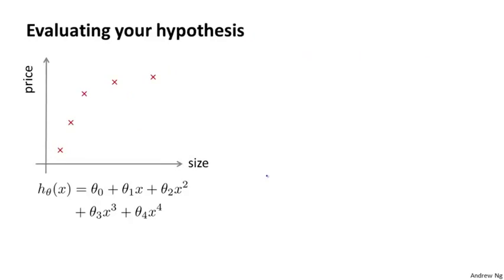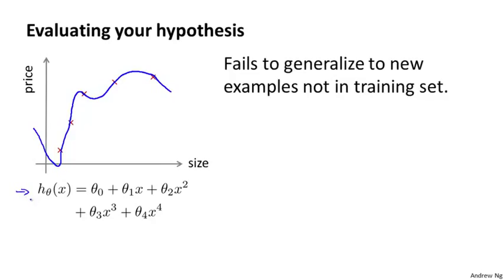When we fit the parameters of our learning algorithm, we think about choosing the parameters to minimize the training error. One might think that getting a really low value of training error might be a good thing, but we've already seen that just because a hypothesis has low training error, that doesn't mean it's necessarily a good hypothesis. And we've already seen the example of how a hypothesis can overfit, and therefore fail to generalize to new examples that are not in the training set.